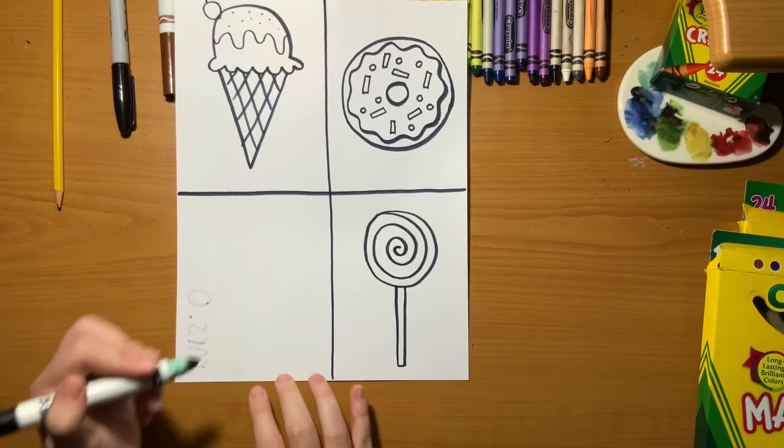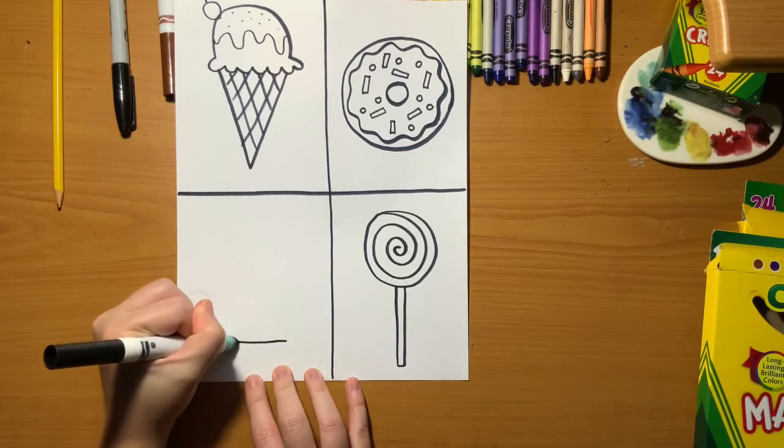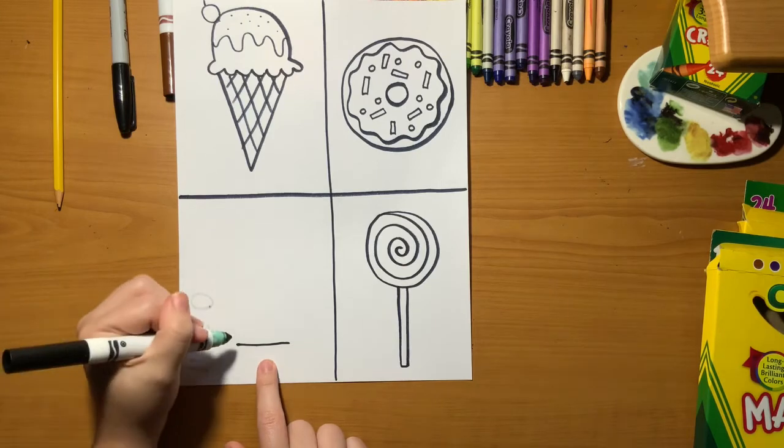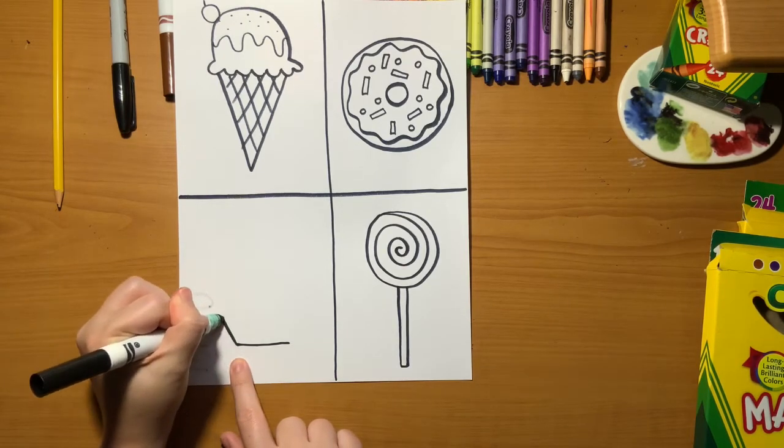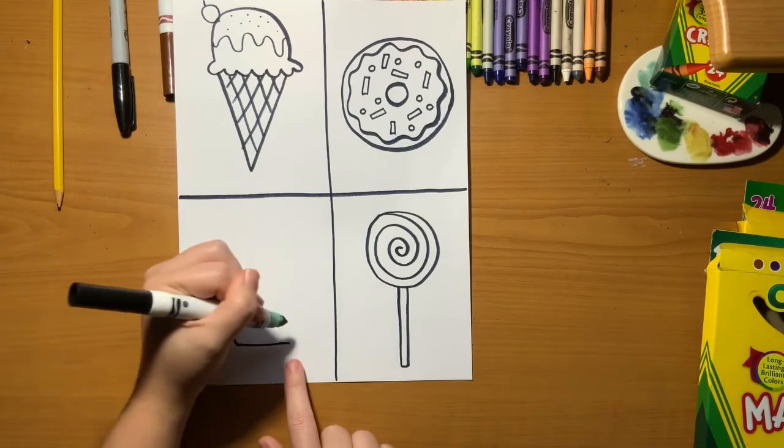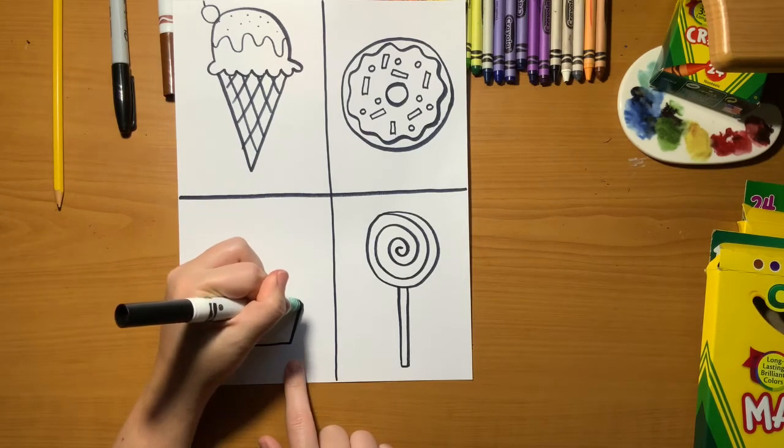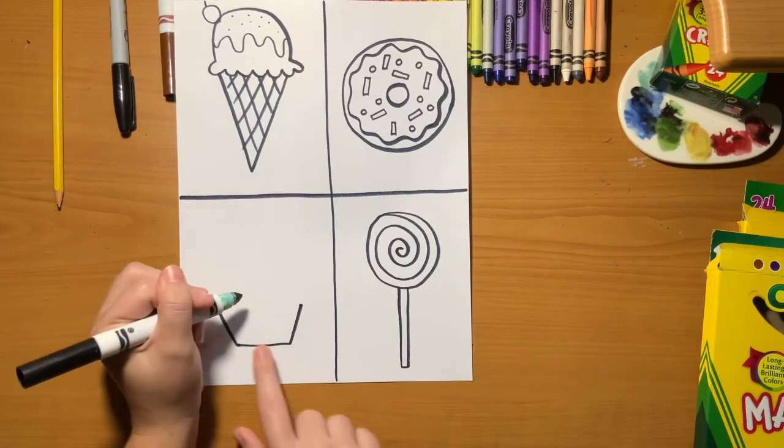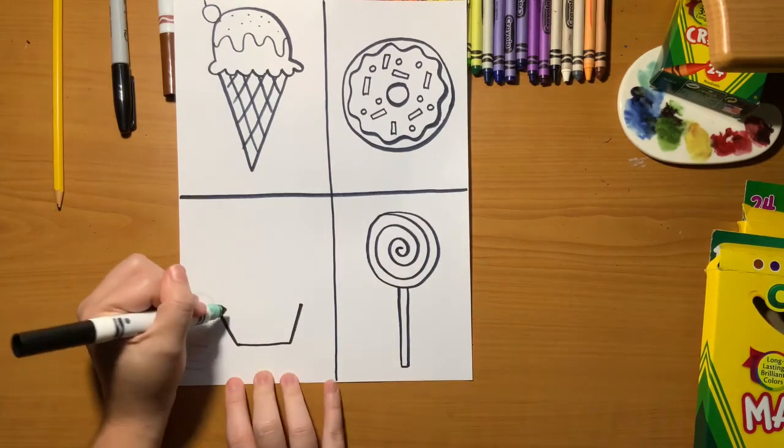In your last box, we're going to draw a cupcake. Draw a straight horizontal line. Not too big, just a small one. Then we're going to draw two diagonal lines coming out of the sides. One going out and the other going out the other way. Two diagonal lines. This is going to be our cupcake's bottom or the wrapper.